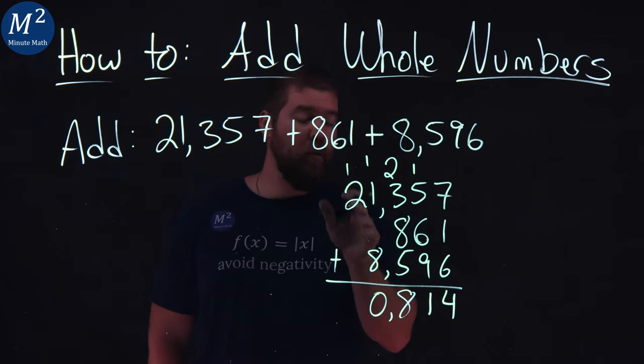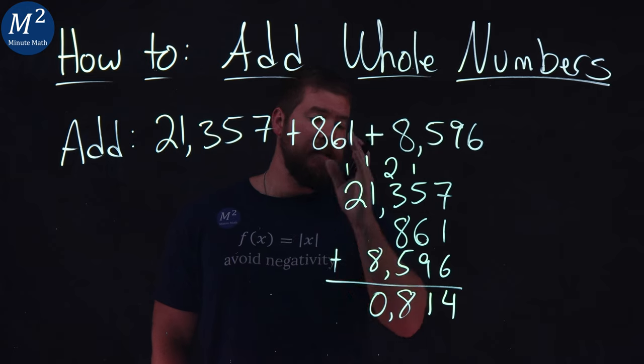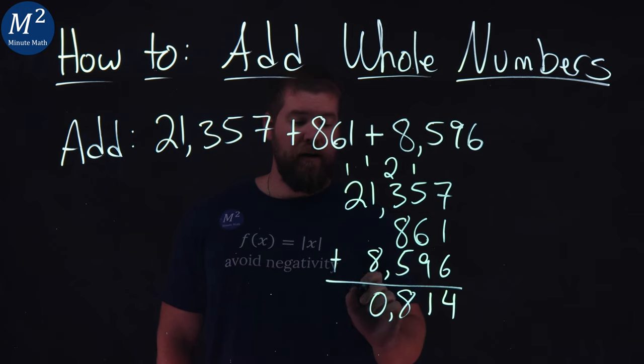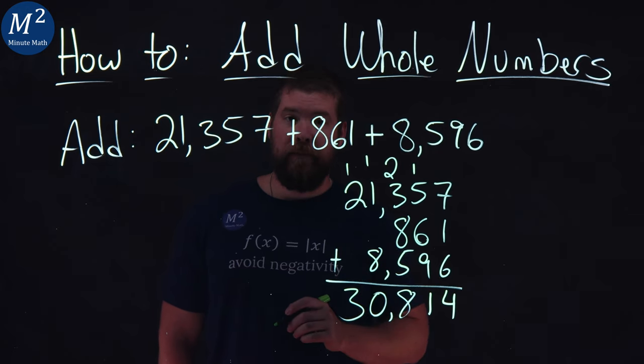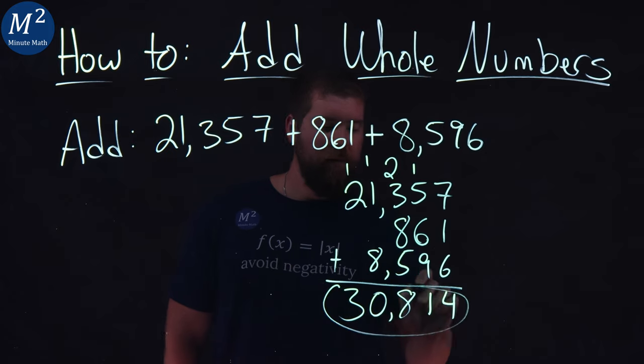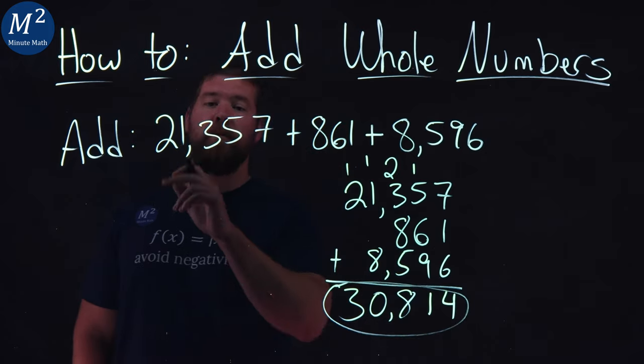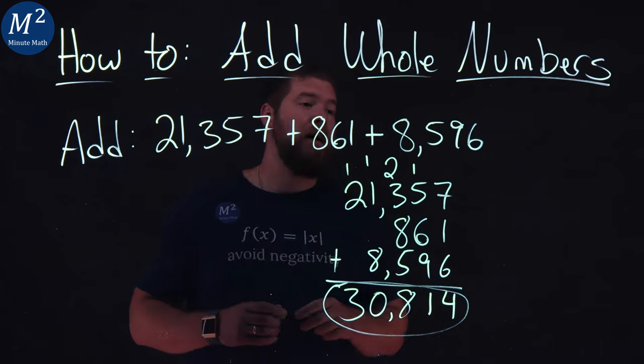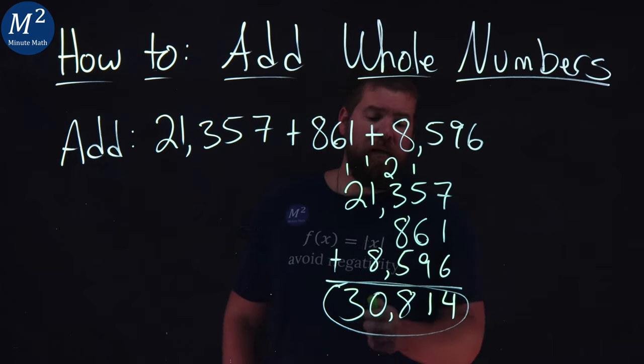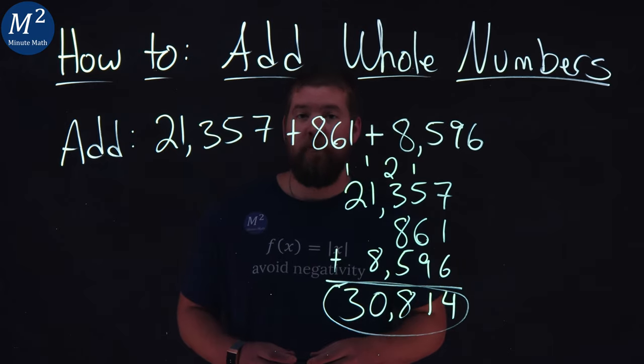From there, I have 1 and 2 are the only digits in the 10,000's place. Add them together, it gives me 3. And so when we add up all three of these numbers here, 21,357, 861, and 8,596, we get 30,814.